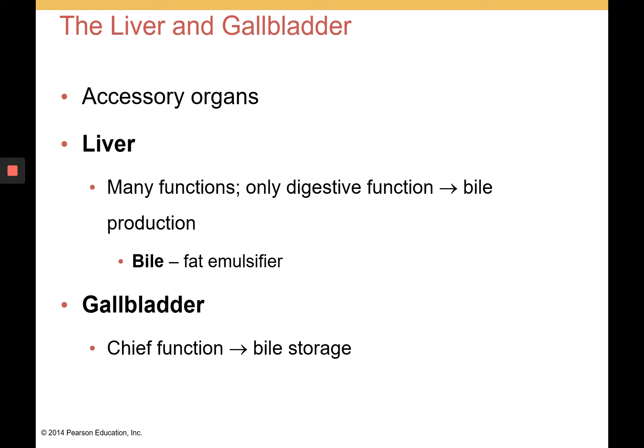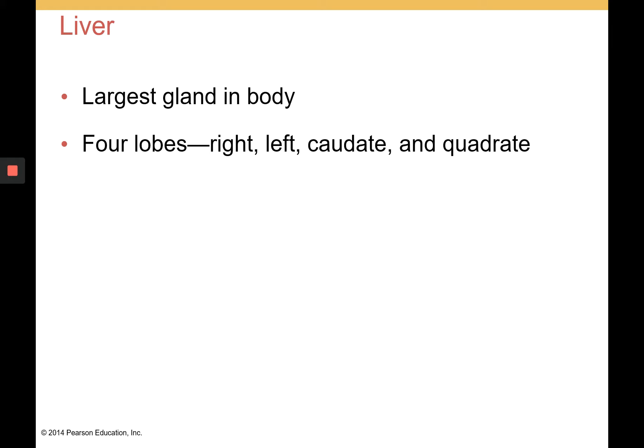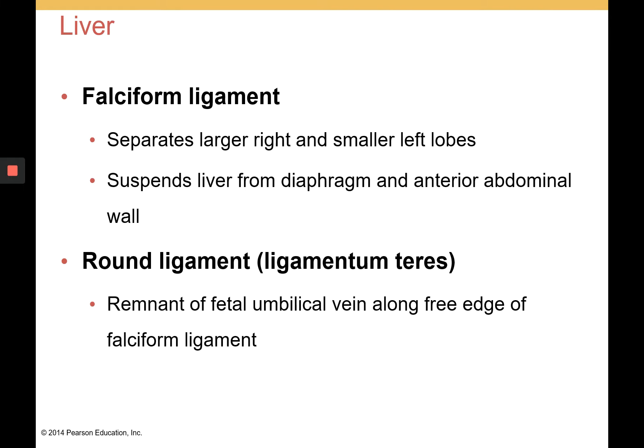The liver produces bile, whereas the chief function of the gallbladder is to store bile. The liver is the largest gland in the body and has four lobes. The falciform ligament separates the right and left lobes and suspends the liver from the diaphragm and anterior abdominal wall. There is also a round ligament — a remnant of the fetal umbilical vein — found along the free edge of the falciform ligament.